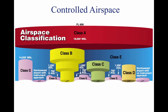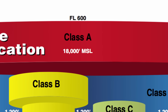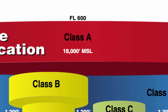Controlled airspace is the generic term that covers the different classifications of airspace and dimensions in which air traffic control services are provided. Controlled airspaces range from Class A to Class E. Class A airspace is generally the air from 18,000 feet above sea level up to flight level 600, or 60,000 feet, and anywhere over water within 12 nautical miles of the U.S. Unless otherwise authorized, all flights in Class A airspace are conducted under instrument flight rules, or IFR.